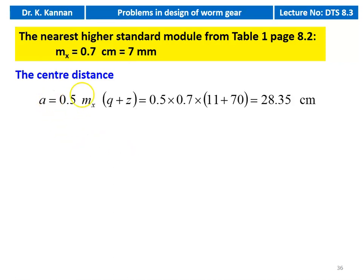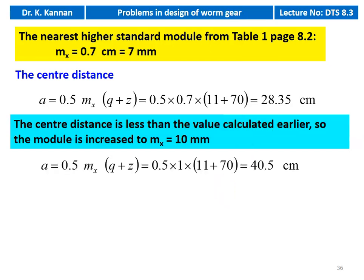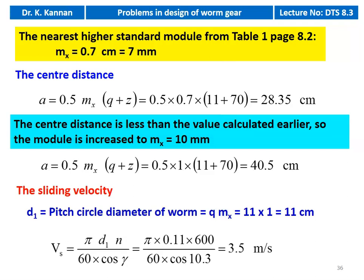The center distance A = 0.5 × MX × (Q + Z) = 0.5 × 0.7 × (11 + 70) = 28.35 cm, which is less than the previously calculated value of 36.55 cm. So we increase the module to MX = 10 mm (1 cm). The new center distance A = 0.5 × 1 × (11 + 70) = 40.5 cm. We calculate the pitch circle diameter D1 = Q × MX = 11 × 1 = 11 cm. Sliding velocity V = π × D1 × N / (60 × cos gamma) = π × 0.11 × 600 / (60 × cos 10.3°) = 3.5 m/s.